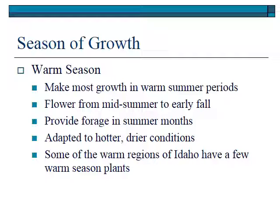Plants that grow in the warm season during the summer and early fall are called warm season plants. Idaho is a cool place with mostly cool season plants, but places that are hot have warm season plants. There are some in the warm regions of Idaho, like down on the Snake River. But if you go to Texas, Arizona, or New Mexico, almost all of their plants are warm season, because they have those higher, drier conditions. These plants grow in hotter conditions because they have a photosynthetic pathway designed for those hotter conditions.